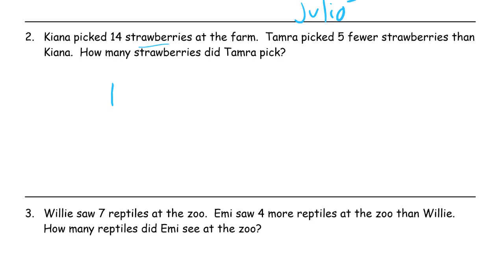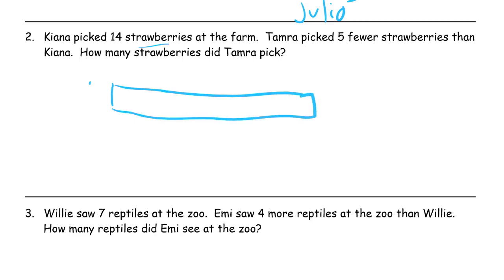It says right here — that's the first sentence. We're just going to draw the first sentence, draw what it says. Here's Kiana — there's her 14 strawberries. Tamara picked five fewer. So here's Tamara. We don't know how many Tamara picked.